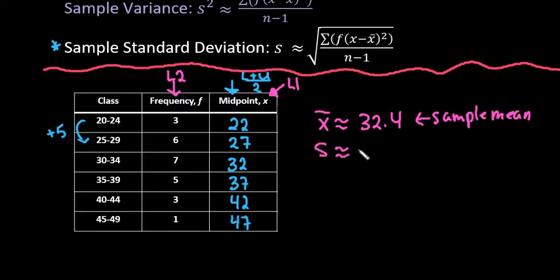S is approximately 6.75771. And this is our sample standard deviation. And to get our sample variance, we would square that whole string of numbers.